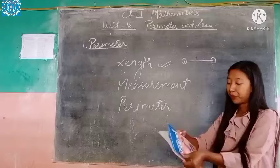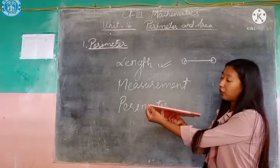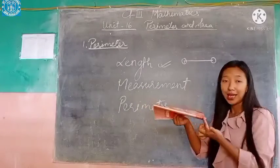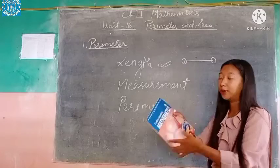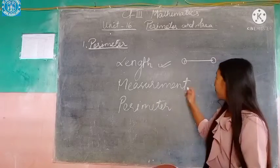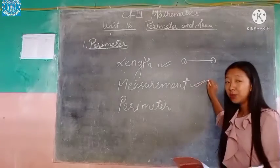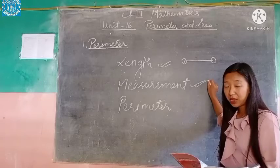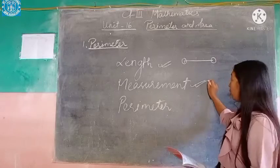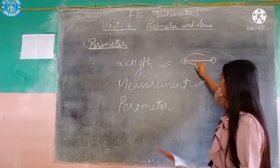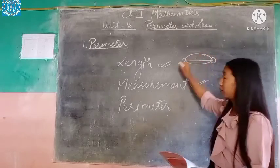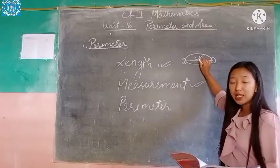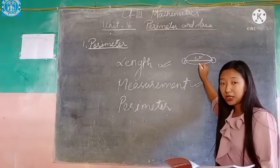So let's see about this book — from this corner to this corner, it is the length of this book. Next is about measurement. Measurement is done in terms of centimeter, meter, and kilometers. So the length of a line will come in centimeters, meters, or kilometers.